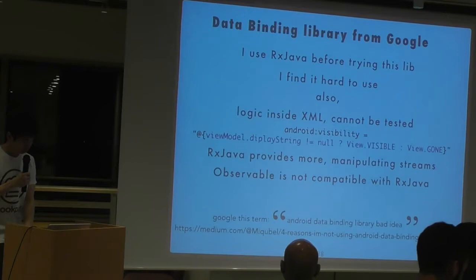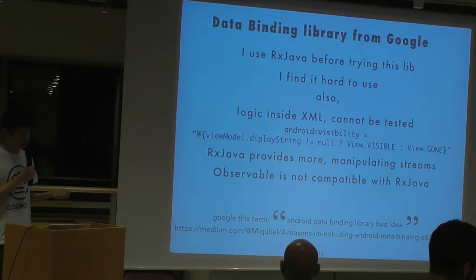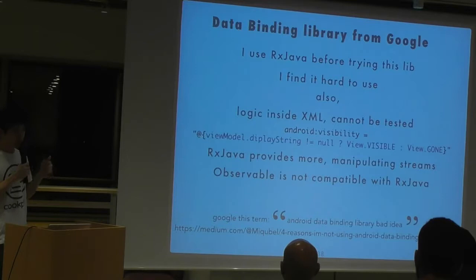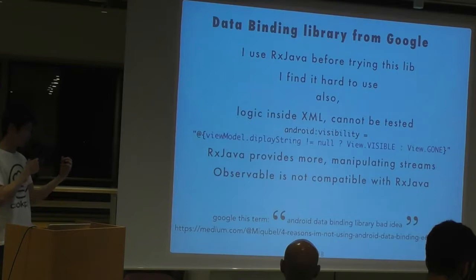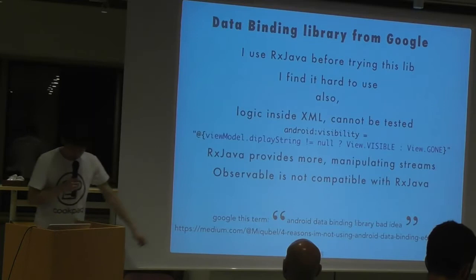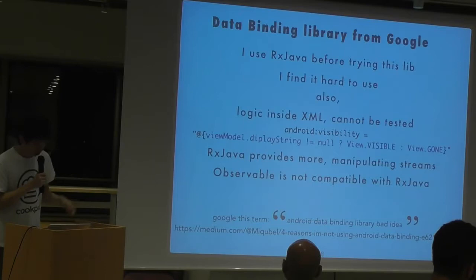In fact, RxJava provides more because it can help you manipulate streams. Also, if you're using the data binding library, they have classes called Observable — but the Observable from the data binding library is very different from RxJava's Observable. Although the names are the same and they do almost the same thing, they're completely different. If you want to use both together you need some manipulation and it's easily confused. If you're interested, Google 'Android data binding library bad idea' and you can read more.